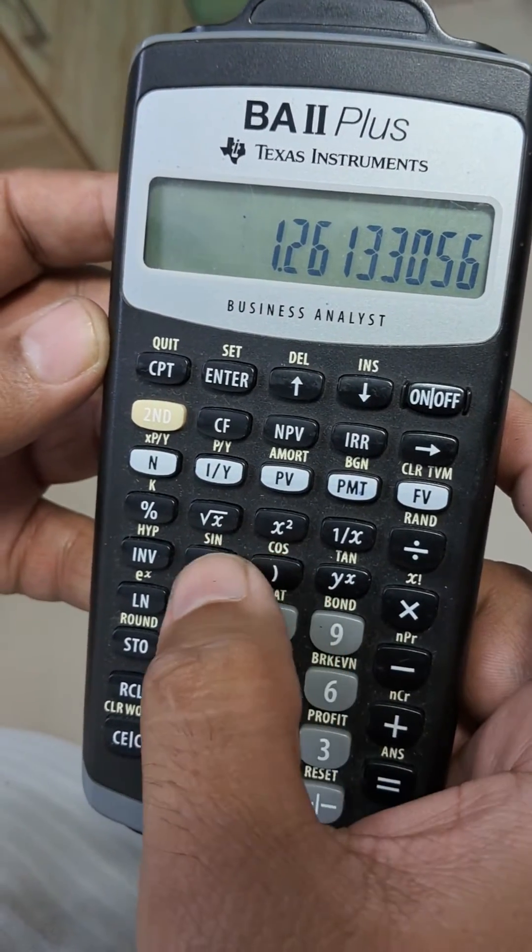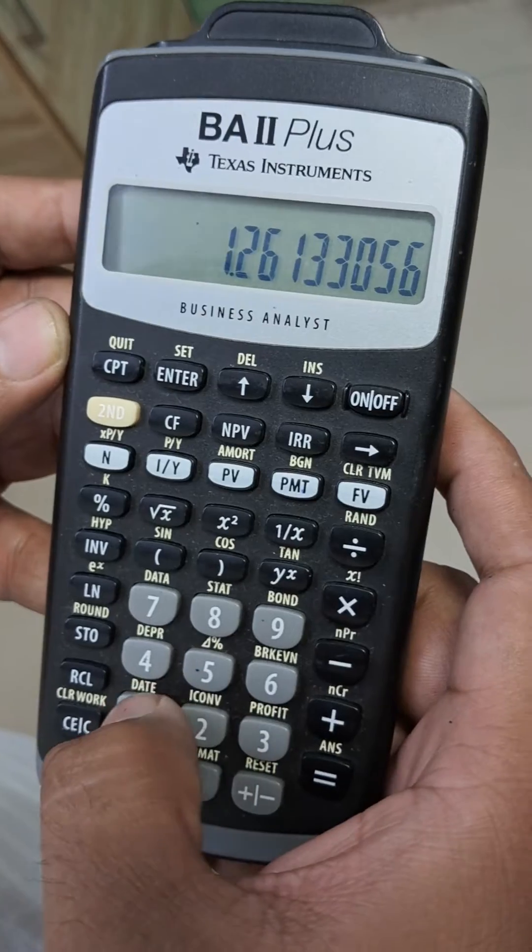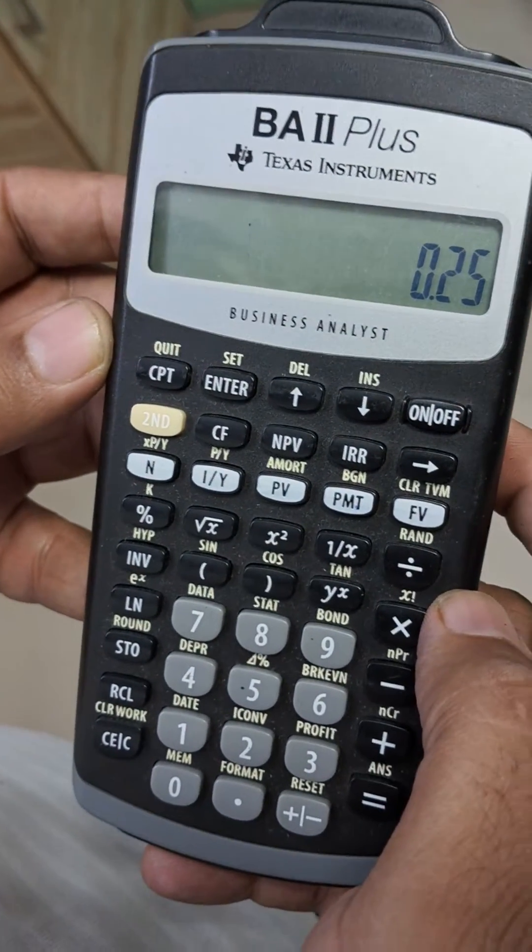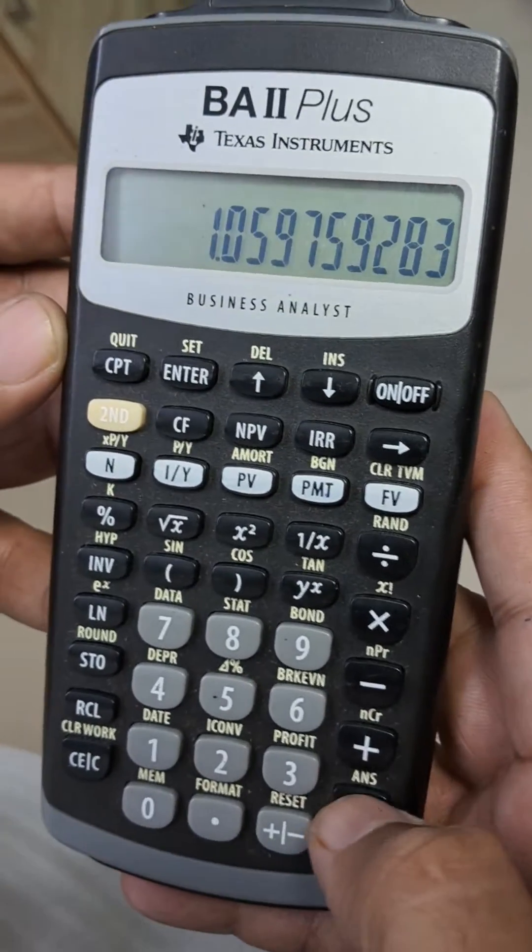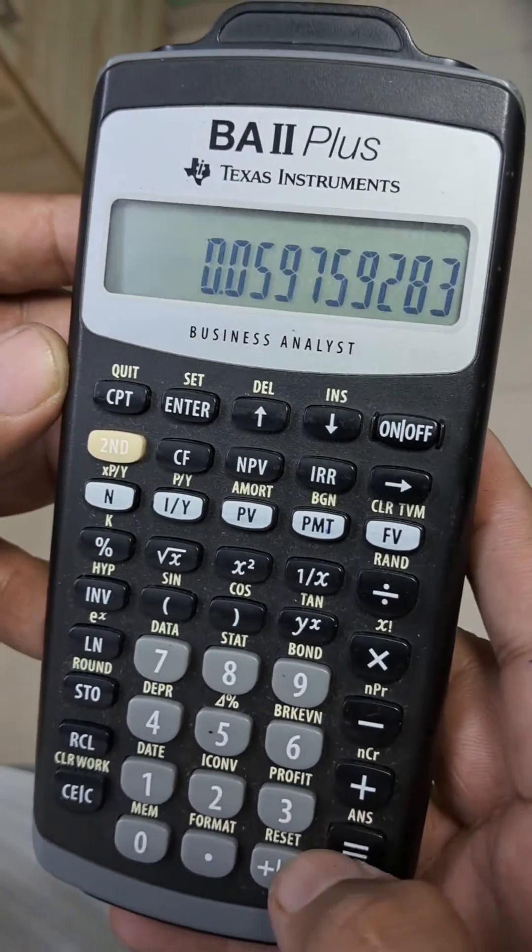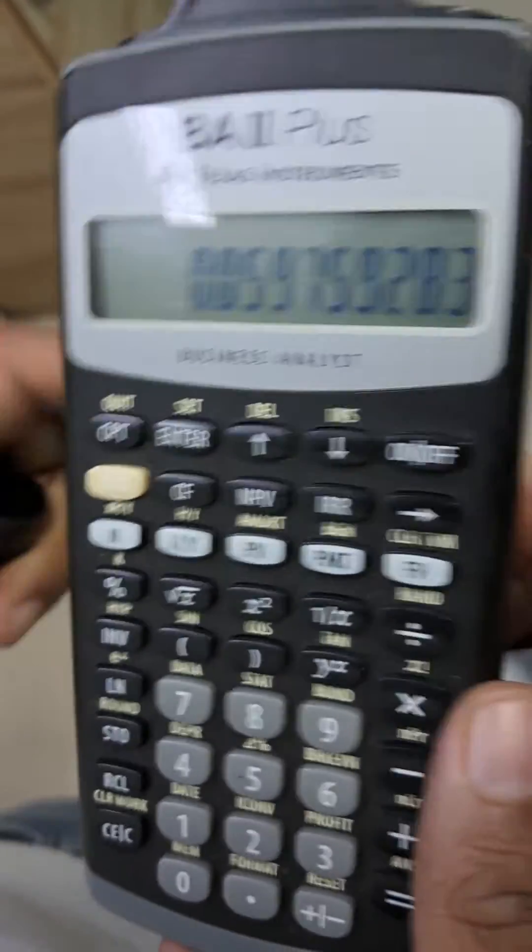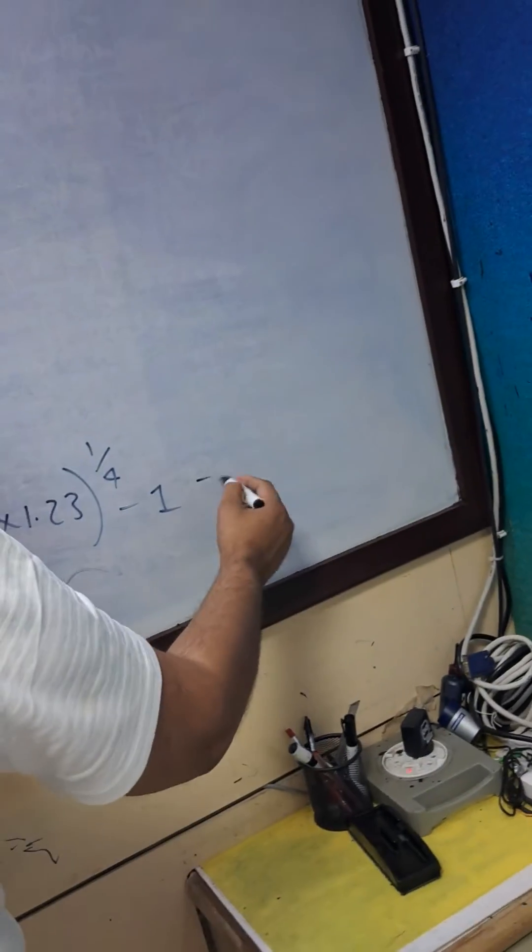Then for 1 ÷ 4, enter: open bracket, 1 ÷ 4, close bracket (or 0.25 for one divided by four), then equals, then subtract 1. You get 0.0598.